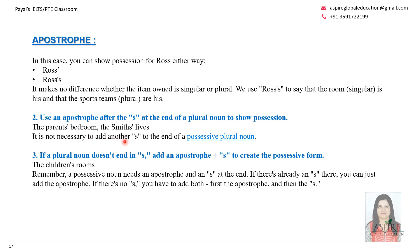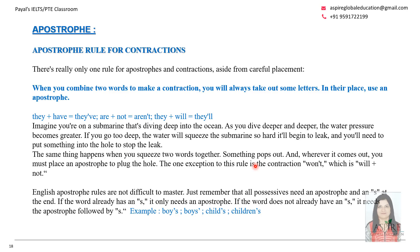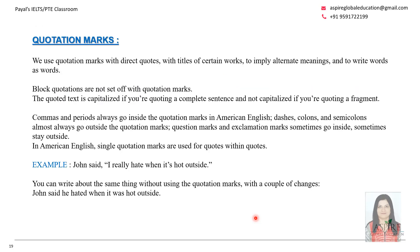For possessive nouns: 'boy's' means belonging to one boy; 'boys'' means belonging to multiple boys; 'child's' means belonging to a child; 'children's' means belonging to multiple children. If a plural noun doesn't end in s, add apostrophe + s to create the possessive form. Apostrophes are also used in contractions: 'they've' (they have), 'aren't' (are + not), 'they'll' (they + will), 'I'm' (I am). To summarize: all possessives need an apostrophe and an s unless the word already ends in s, in which case only an apostrophe is needed.